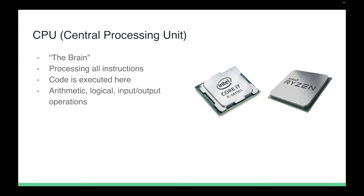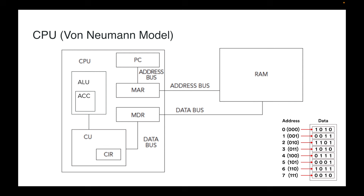Now we're going to go through how a CPU works. This is a long and multi-step process you need to know. Basically every CPU follows the von Neumann model, and we're going to describe how that works at a high level. So get a coffee like I did and strap in.